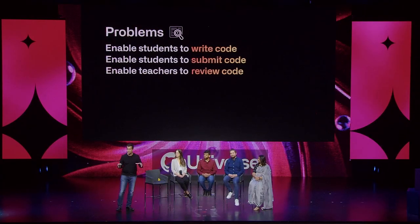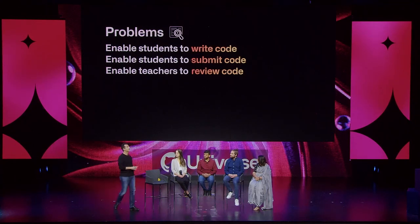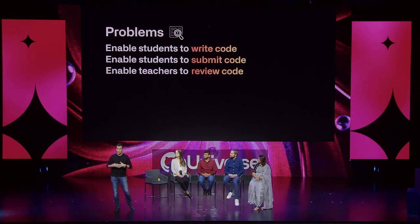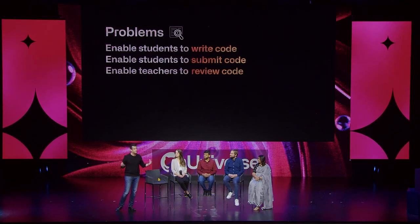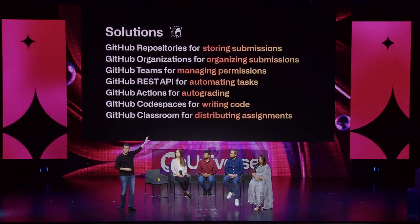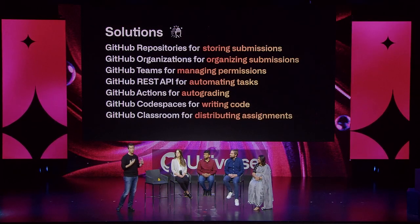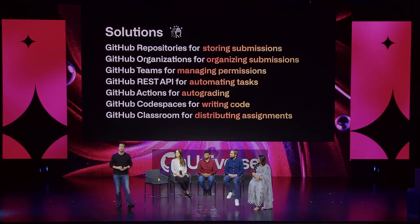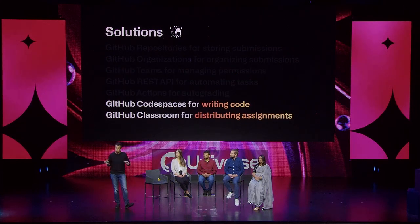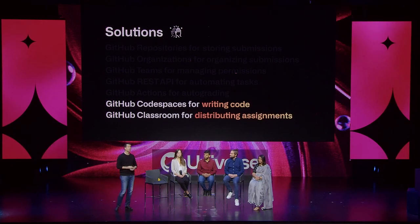Over several years, for CS50 and its follow-on courses, we've had recurring problems to solve — enabling students to write code, submit code, and review code. We didn't want to allocate our limited development resources to solving these ourselves, so we tried to build upon open source and commercially available software, acting as glue stitching together commodity-style solutions so we could focus on pedagogy. Most recently we've built on top of GitHub.com, Codespaces for writing code, and GitHub Classroom to distribute assignments and problem sets.